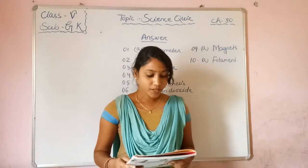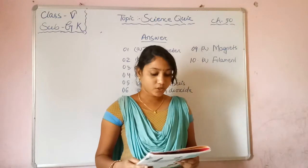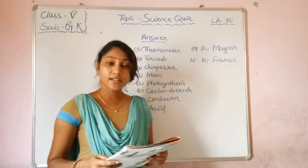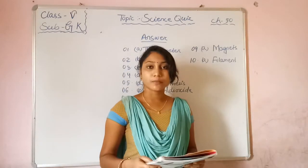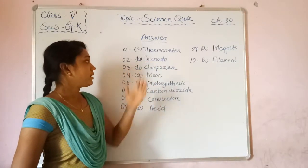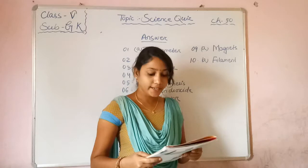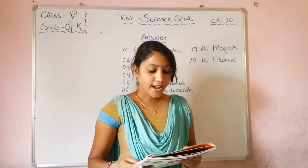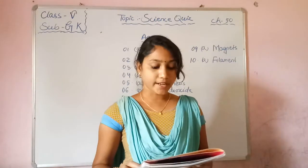Next question: A twister is also known as? Options: yard curve and tornado. The correct answer is Option B — tornado. A twister is also known as a tornado.